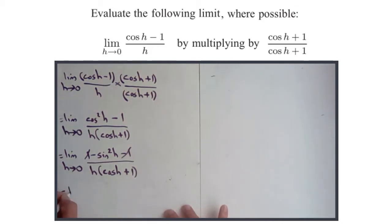As h approaches 0 of minus sine h squared over h. And I'm even going to just pull this cos bit apart, so 1 over cos h plus 1. And the reason why I'm doing this is because I'm looking to get rid of this sine bit by trying to get an instance of sine h over h, which I'm not quite there yet, but I'm getting closer.